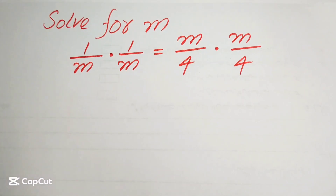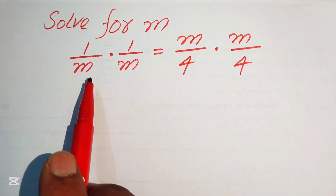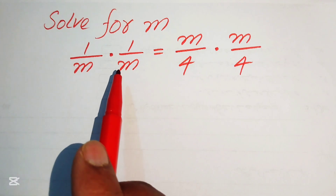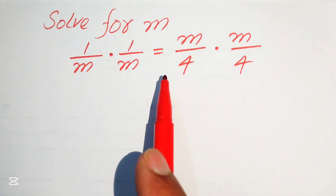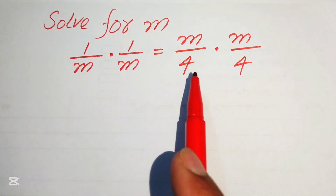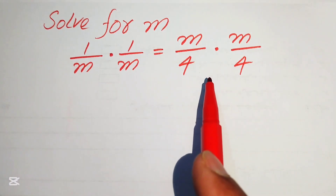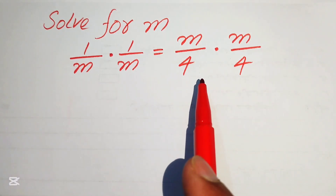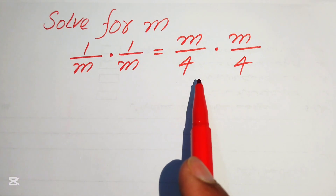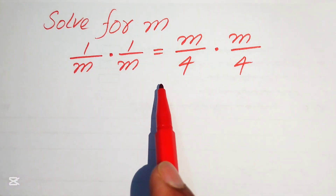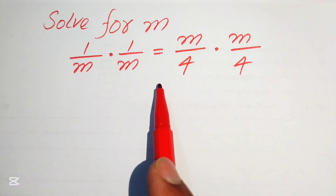Hello everyone, welcome. We are going to solve this math Olympiad algebra problem. Here we have (1/m)(1/m) = (m/4)(m/4), and we need to solve this problem for the values of m.